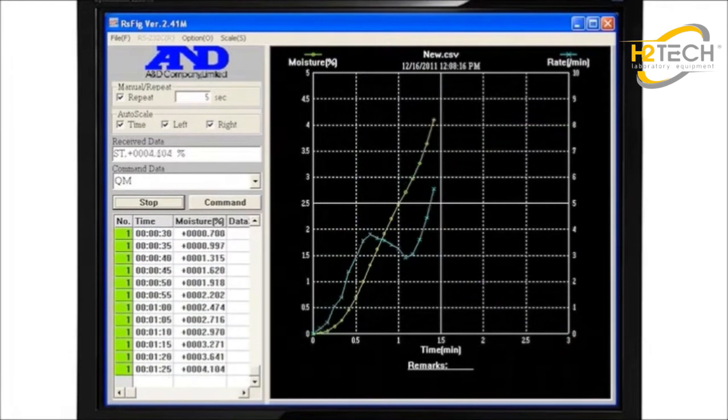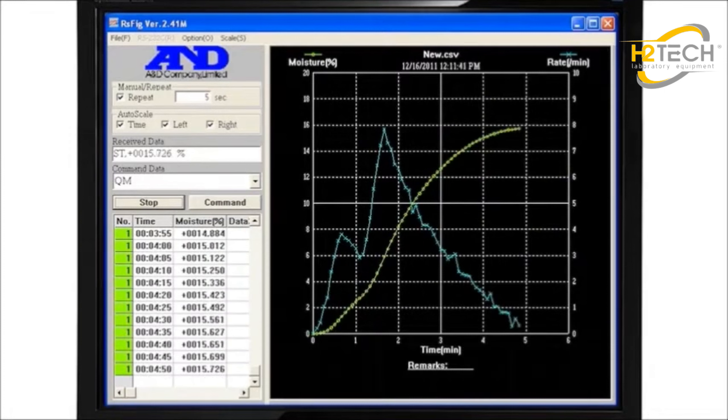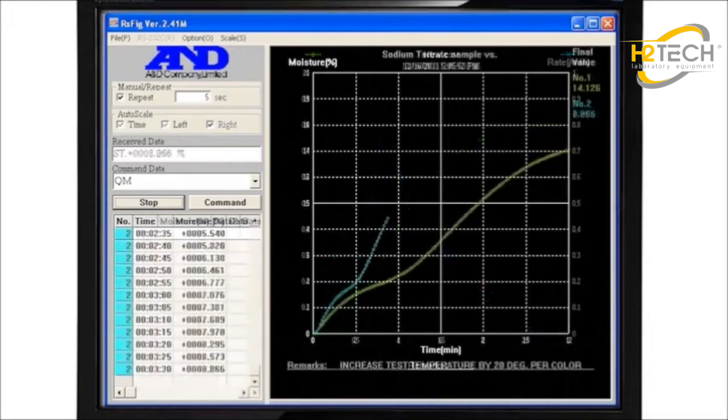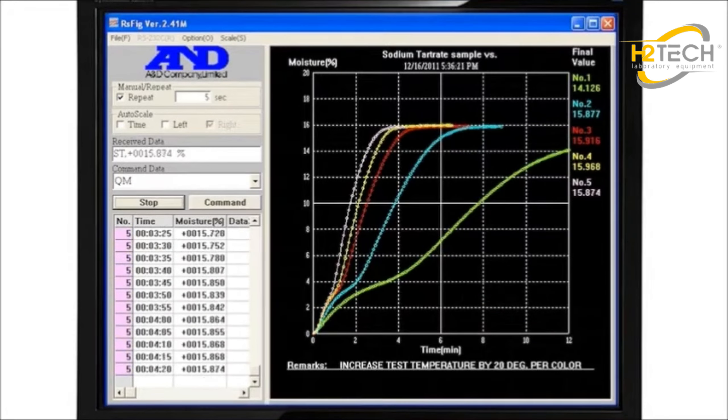Here, WinCT plots moisture content as it reaches its final value and the change in moisture rate approaches zero, indicating the sample is now dry. Successive measurements at different temperatures are graphed in different colors.